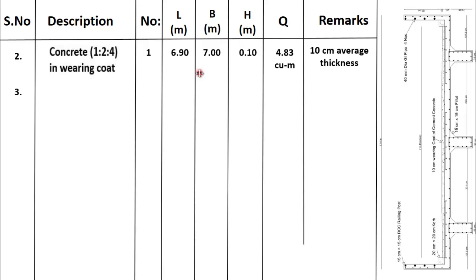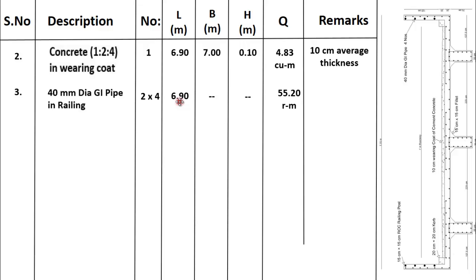The third item of work is 40 mm dia GI (galvanized iron) pipe in railing. As you can see, on each side, 4 numbers of 40 mm dia GI pipes are provided. So on both sides, the number of GI pipes will be 2 × 4 = 8. The length of each GI pipe will be 6.90 metres. After multiplying these two quantities, the total quantity of GI pipes is 55.20 running metres, because the quantity of pipes is generally calculated in running metres.